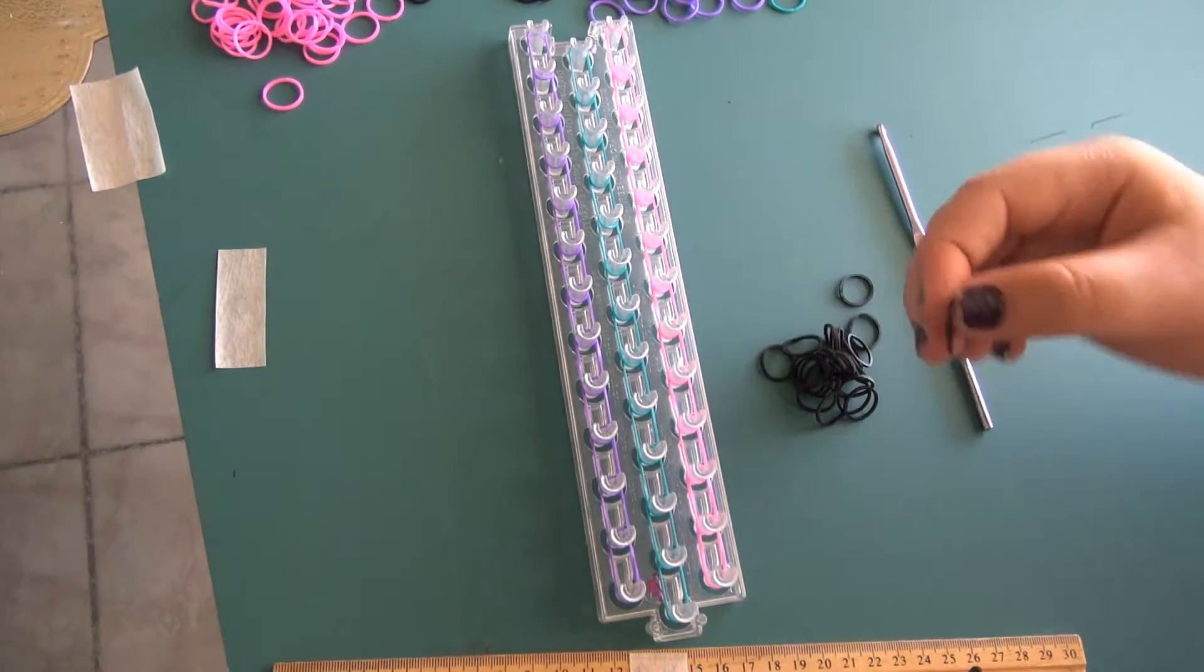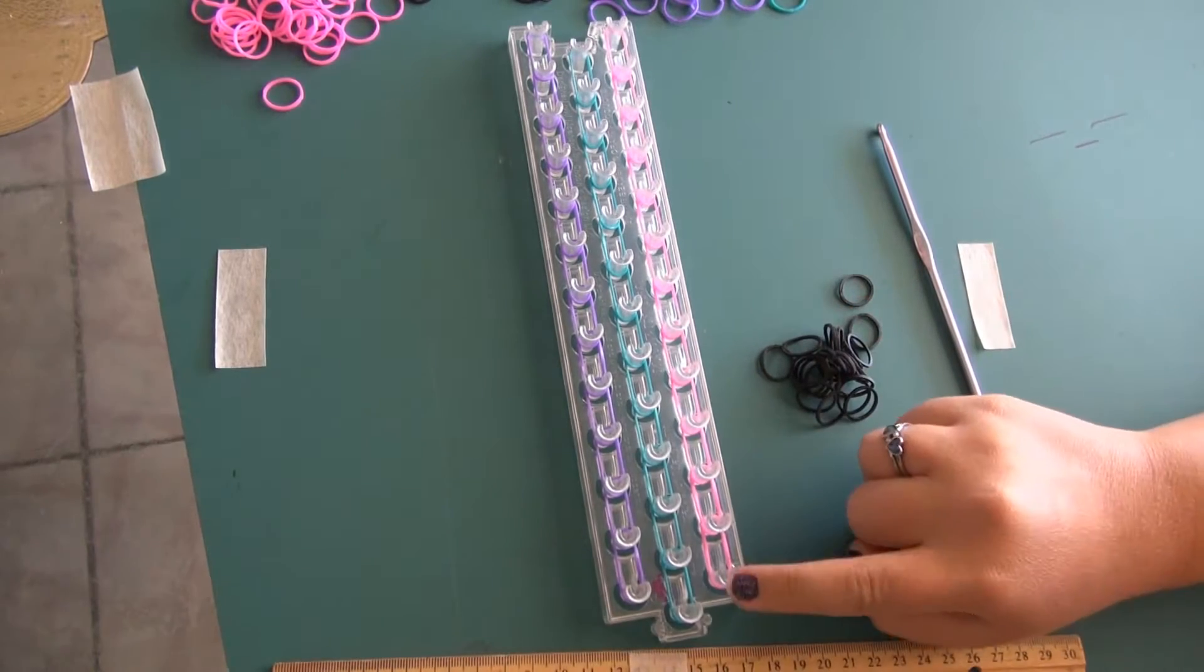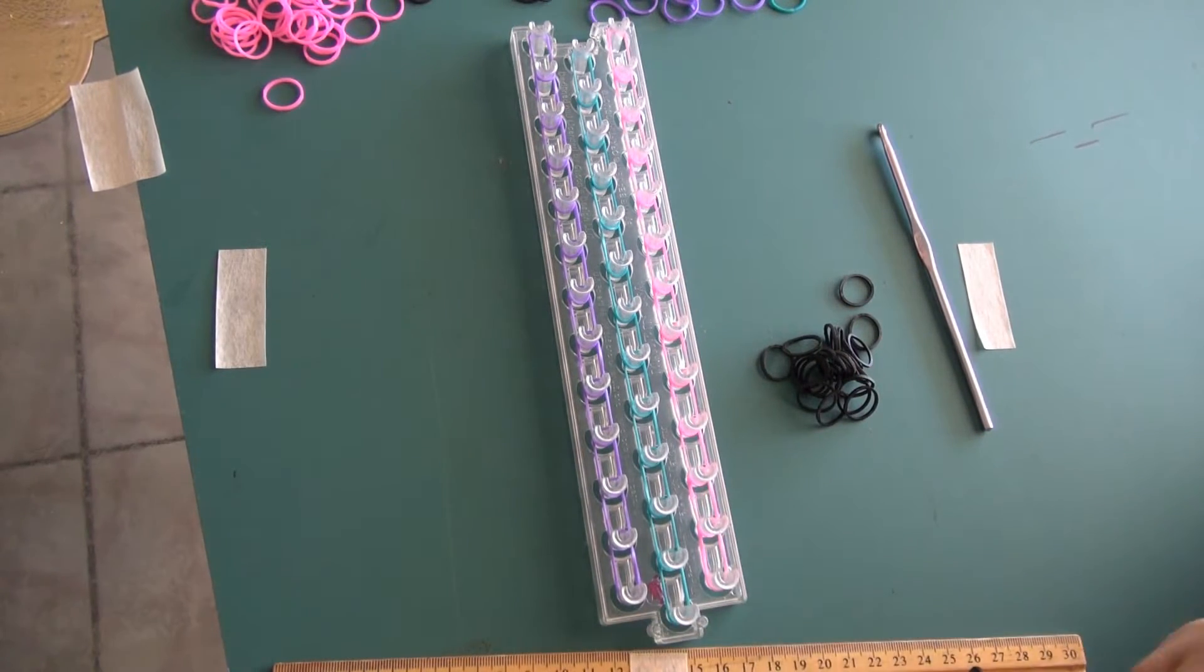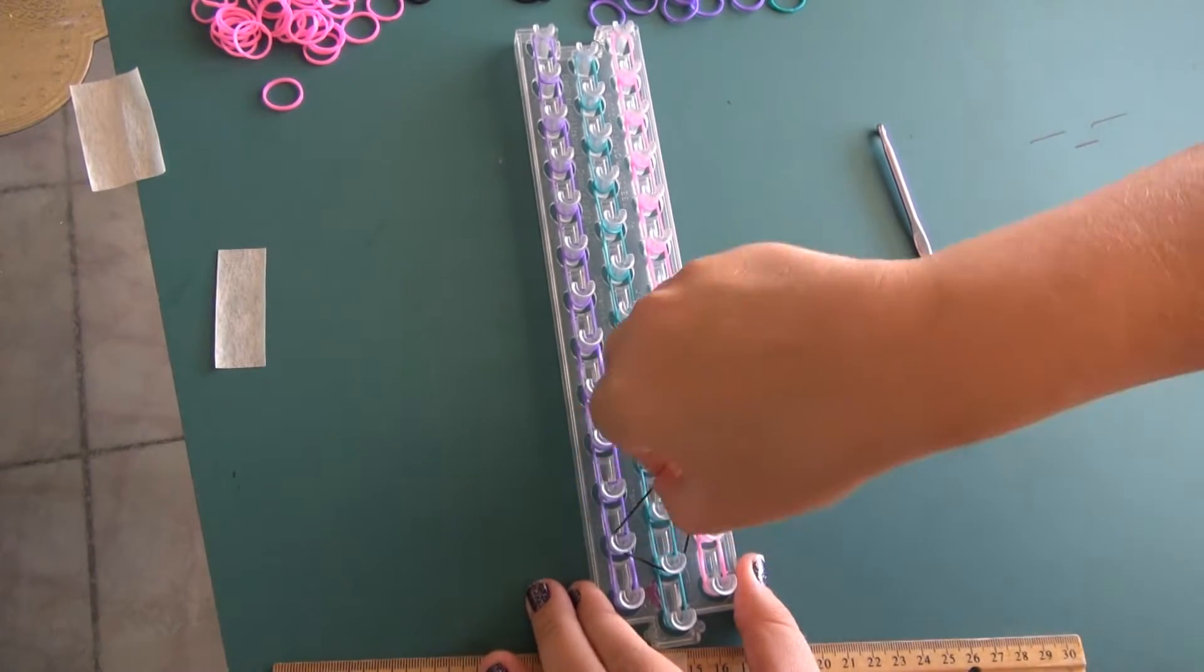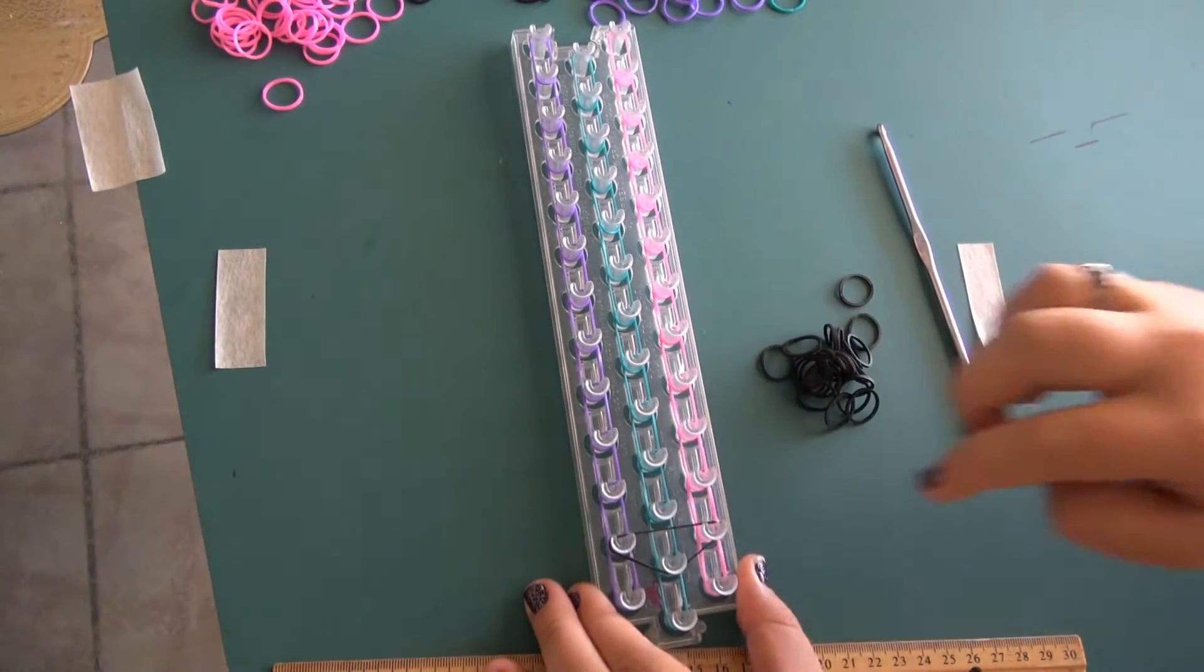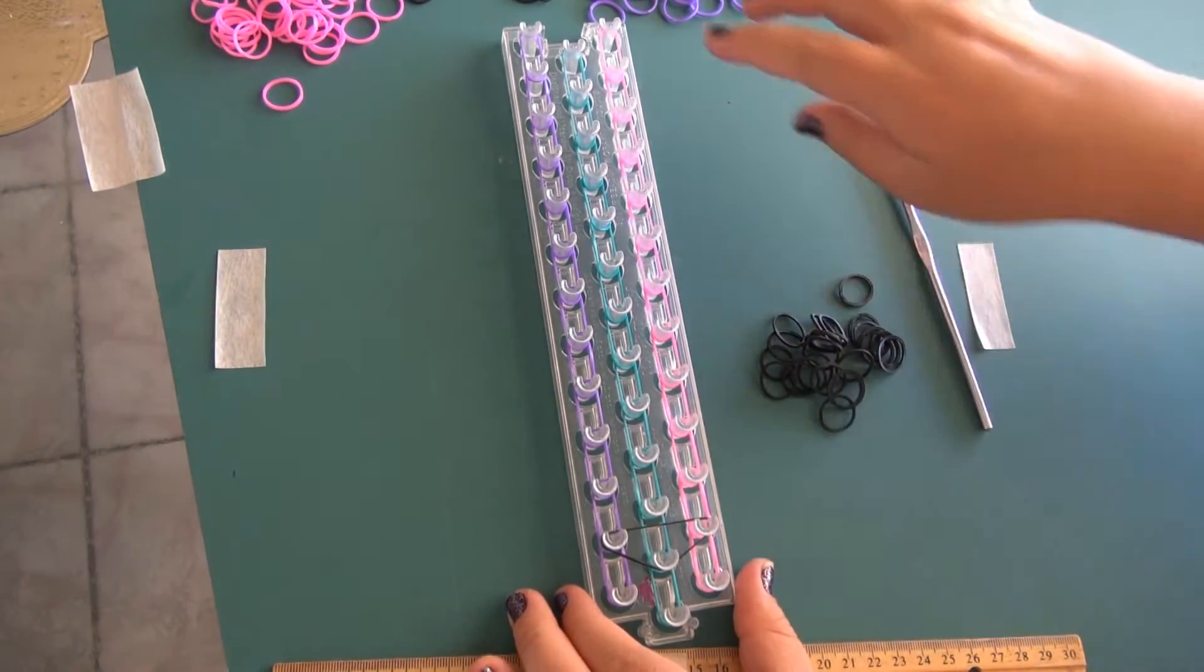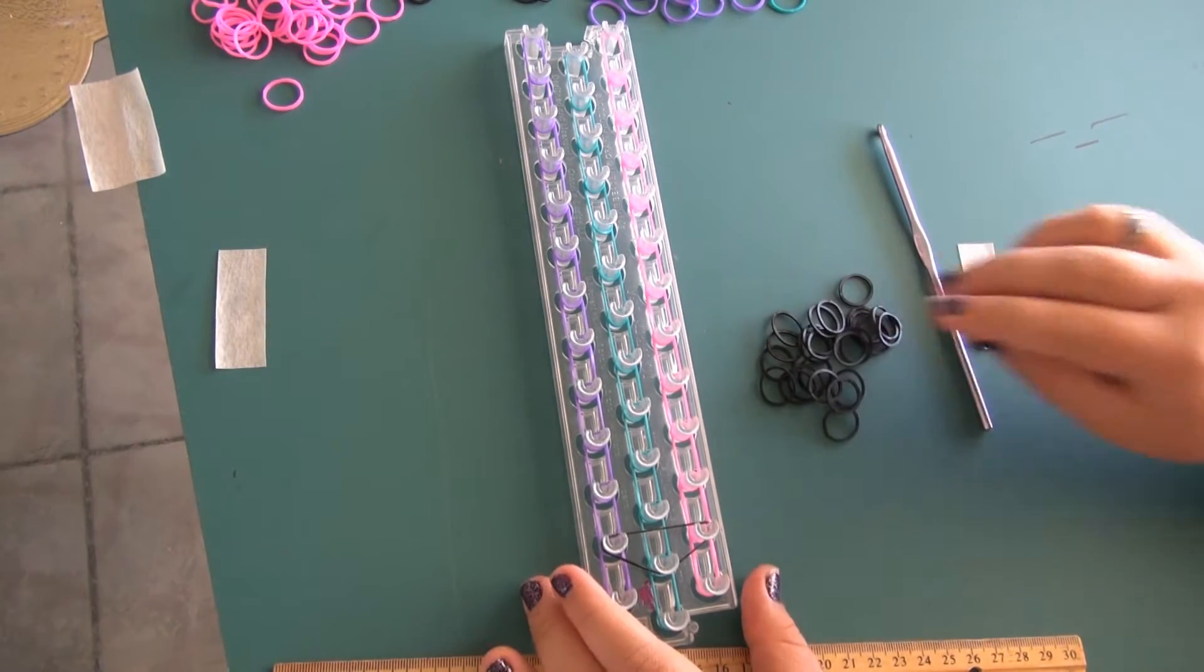So you start by placing triangle bands on there, and you skip the first three pegs closest to you. Make sure the red arrow is still facing away. So you put it there, there, and there, and that's a triangle shape. And you continue that up all the way until you get to the top.